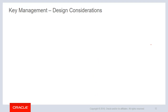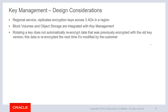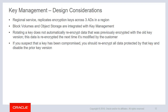What are some of the key design considerations when using key management? First, it's a regional service and it replicates encryption keys across three availability domains in a region. Block volumes and object storage are currently integrated with key management. Rotating a key does not automatically re-encrypt data that was previously encrypted with the old key version — this data is re-encrypted the next time it's modified by the customer. If you suspect that a key has been compromised, you should re-encrypt all data protected by that key and disable the prior key version.